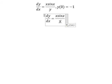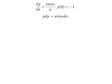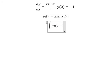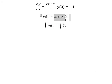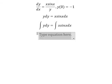So y will go to the left, ds will go to the right. Next, we put the integration for both sides. The integration of y dy gives us y squared over two.